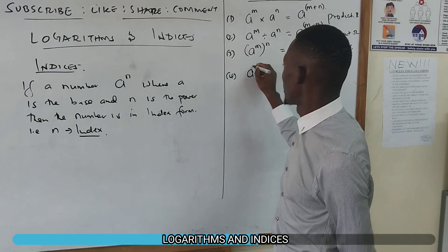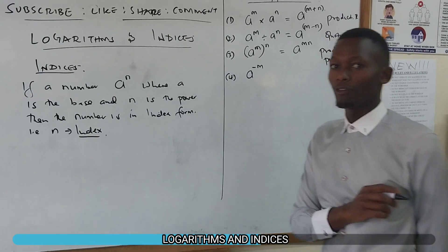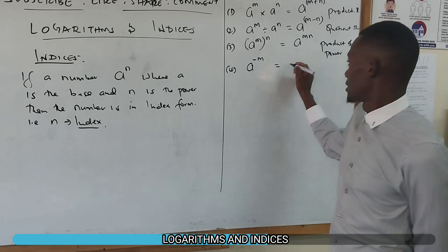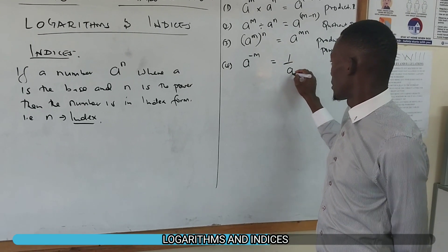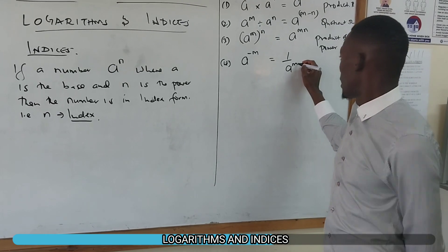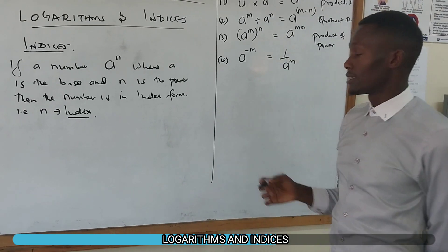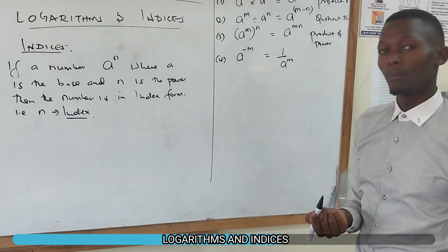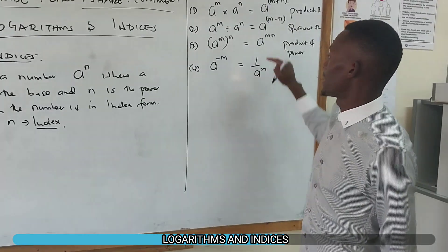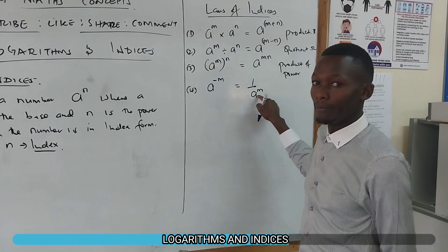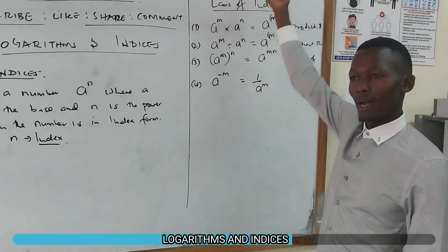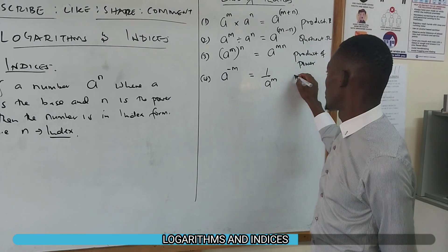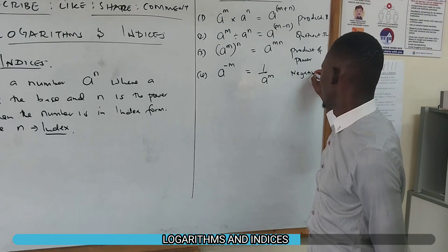Number four: if you have a number raised to the power of negative m, this basically means the number is supposed to be at the denominator, but you change the sign to be positive. It works both ways — if a number is at the denominator with a negative power, you bring it to the top and the power becomes positive. This is called the negative power.